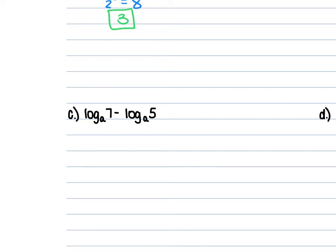For C, we have log_A of 7 minus log_A of 5. Our log_A bases are the same, so keep the log_A and do 7 divided by 5. When you do this, you're going to write it as a fraction — log_A of 7/5.